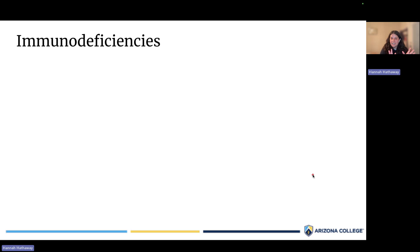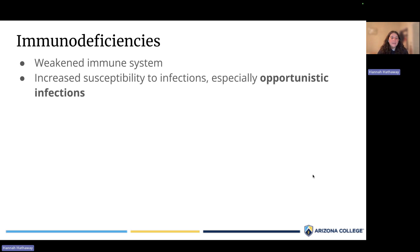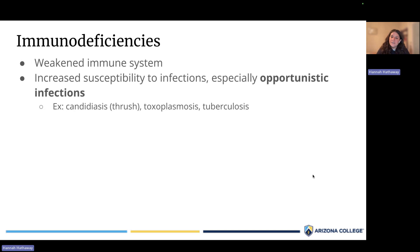The flip side of hypersensitivity is immunodeficiency. In immunodeficiencies, the immune system is weakened — it is not responding to harmful things and letting them run rampant. Because of this, people who are immunodeficient are more susceptible to infections, especially opportunistic infections — caused by pathogens we're routinely exposed to but a healthy immune system keeps under control. Examples of opportunistic infections include fungal infections such as thrush, toxoplasmosis, and tuberculosis.